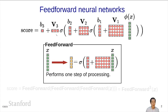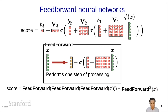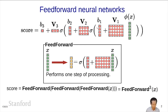Now we can write our three-layer neural network using feedforward. The score is equal to taking phi of x and applying feedforward three times, which you can write as feedforward cubed to be more compact. This is a very compact way of writing something that would otherwise be quite complicated.